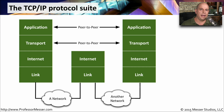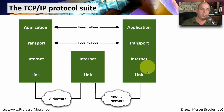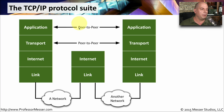The communication that applications use across our network is very compartmentalized. The applications communicate to applications, and they really have no idea what's happening down at the network level. The network devices, of course, are sending traffic between point A and point B, but they generally also don't know what happens to be inside of the application data — they're simply sending it from one side of the network to the other. So when we draw this out in the IP protocol suite, we can see applications talk to each other directly.